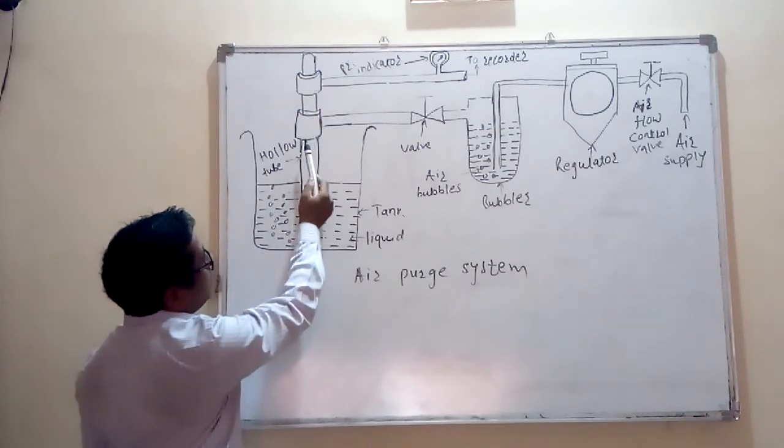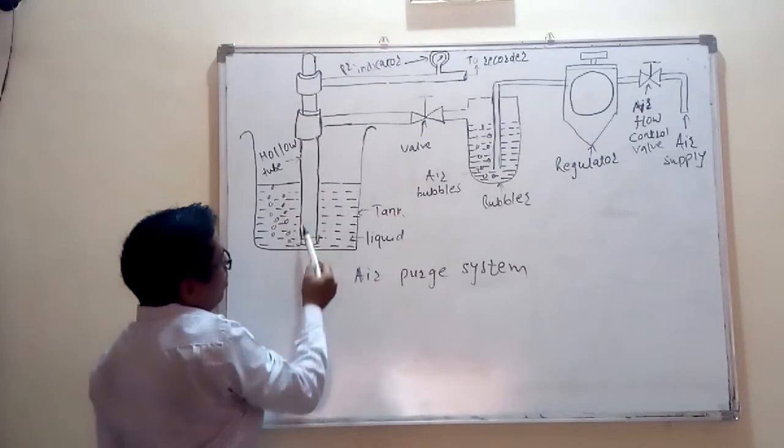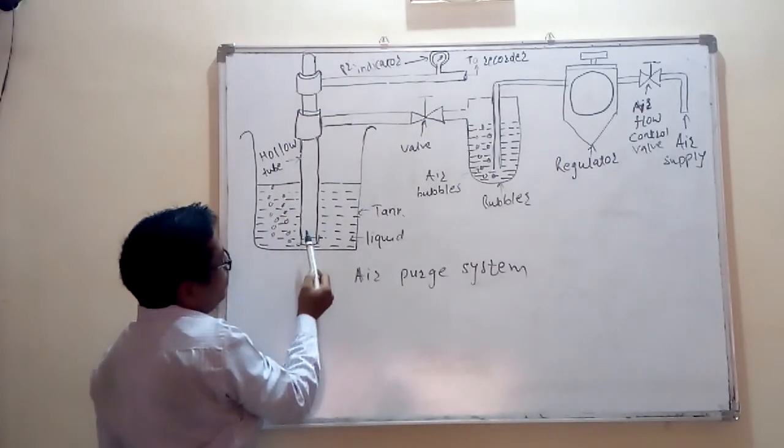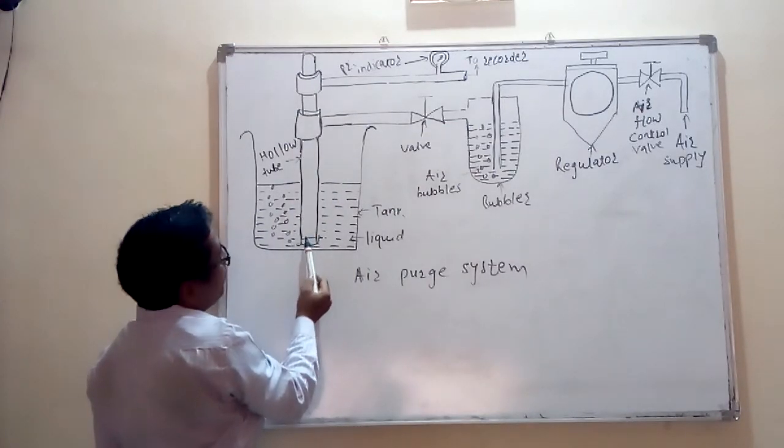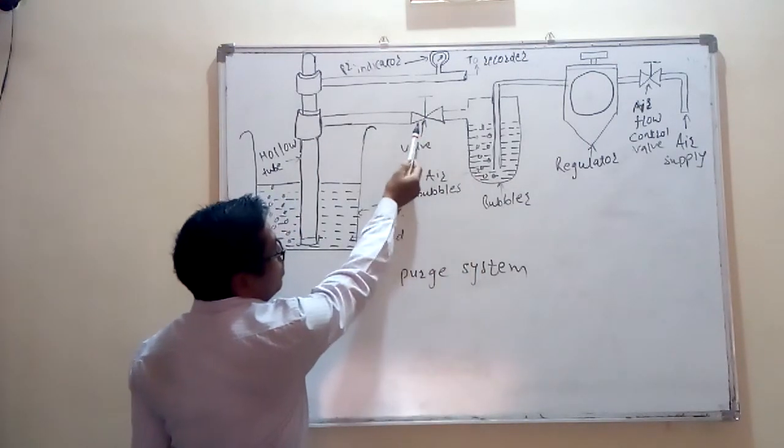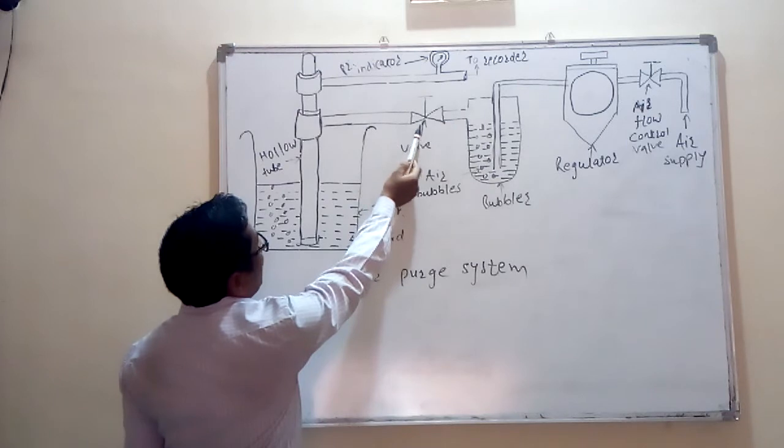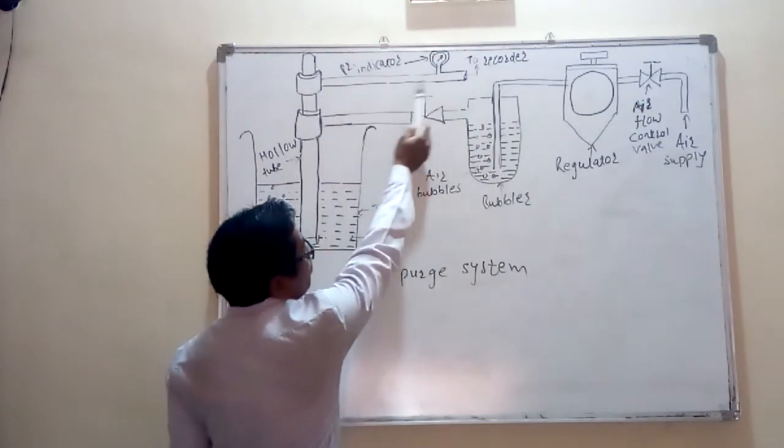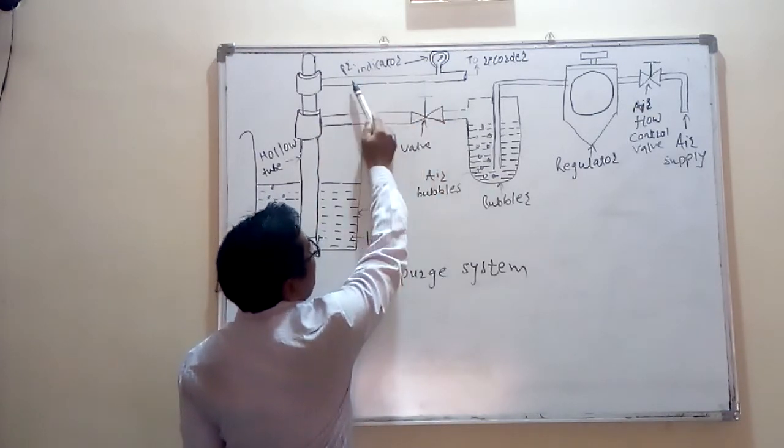There are two connections. This is hollow glass tube entering into this liquid tank. One connection is going to this bubbler with the connector through this valve. And another connection goes to the pressure indicator with the help of this tube.